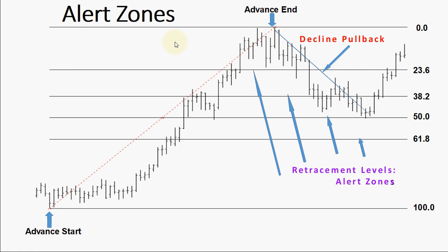So now let's talk about the alert zones. Retracement levels alert traders or investors of a potential trend reversal, resistance area, or support areas. Retracements are based on the prior move. This is an example of an upward move — we started from here and advanced up to the high point, then we put our retracement tool over this range. We can see where the decline bounced off our 50% retracement level. The first retracement level is 23.6, the next is 38.2, followed by 50 and 61.8.